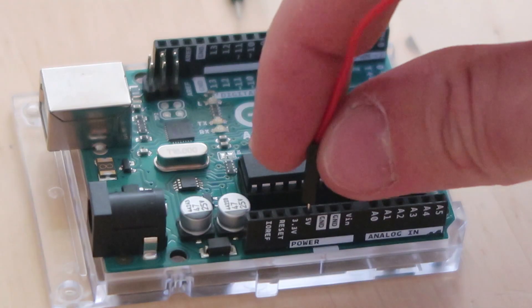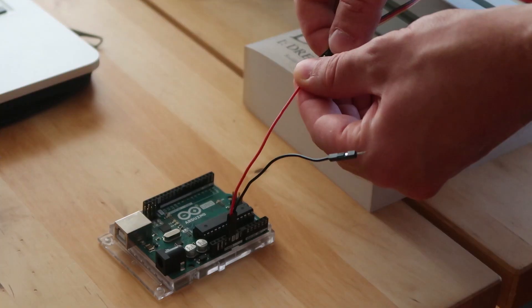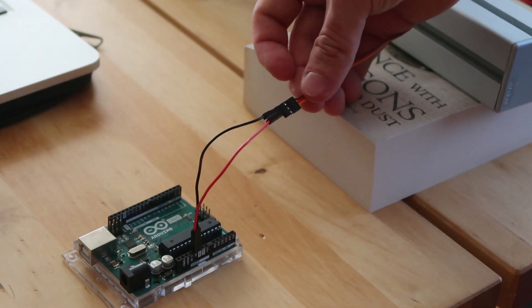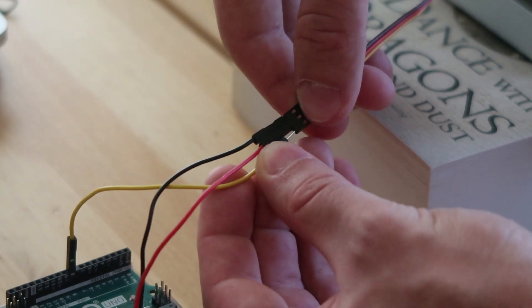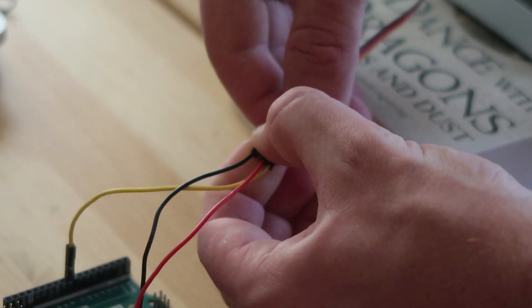So I will power the Arduino directly from one of the ESCs like so. Then I'm going to connect the command wire to a digital port of the Arduino.